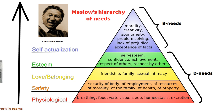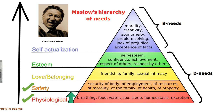Number one: physiological needs. These are the basic, fundamental needs necessary for survival, such as air, food, drink, shelter, clothing, warmth, sex, and sleep. Number two: safety needs. Once physiological needs are met, individuals seek safety and security, including physical safety, financial security, employment stability, and a safe environment.